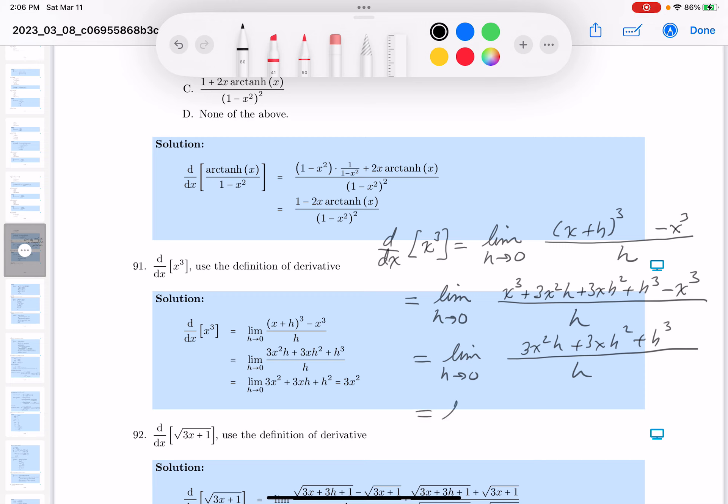Well, since h isn't zero, I can divide through. And what would you get? 3x squared plus 3xh plus h squared.